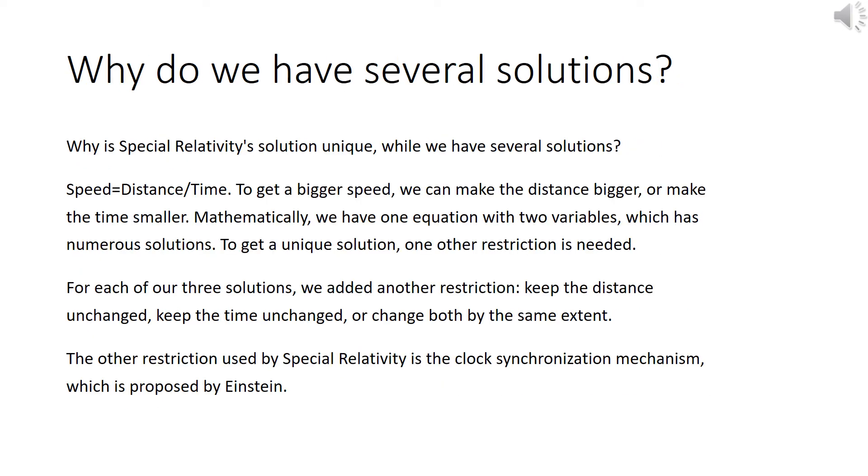Why is special relativity solution unique? Well, we have several solutions. Let's recap. Speed is equal to distance divided by time. To get a bigger speed, we can make the distance bigger or make the time smaller. Mathematically, we have one equation with two variables, which has numerous solutions. To get a unique solution, one other restriction is required.